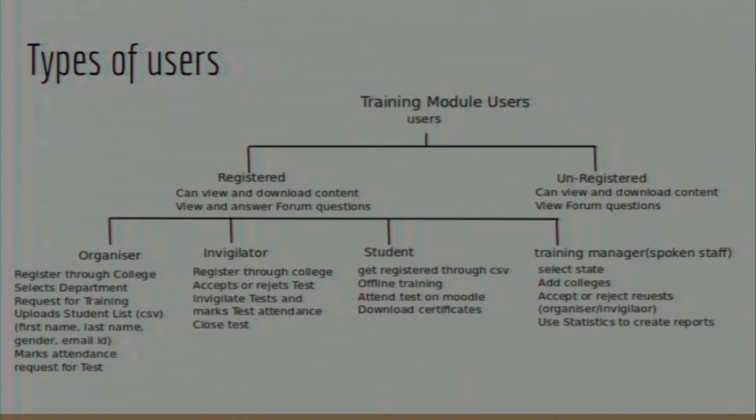If an organizer is planning training this semester — since colleges follow a six-month semester pattern — and they want to teach Java using our material, they need to let us know. The training interface allows them to initiate a training request, so that data comes to us and we know this organizer at this college plans to use our content to teach students.